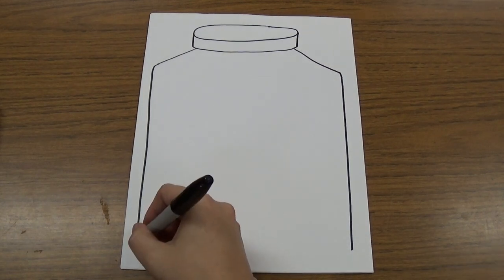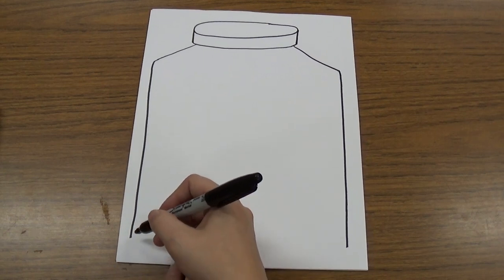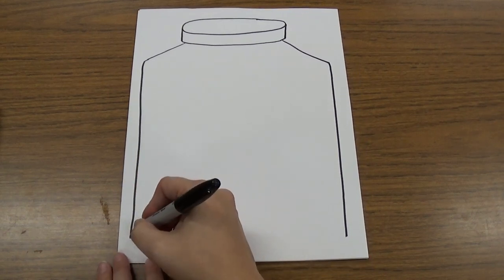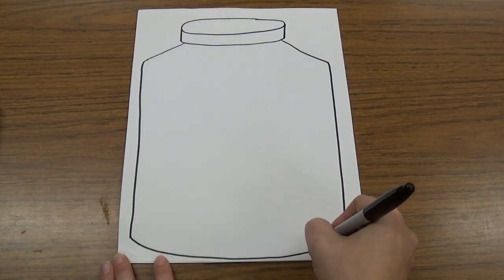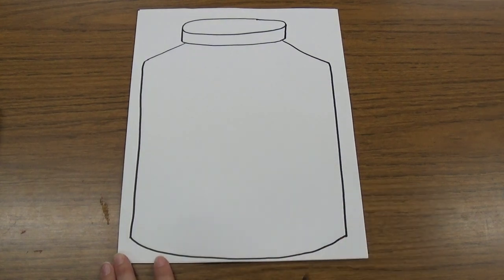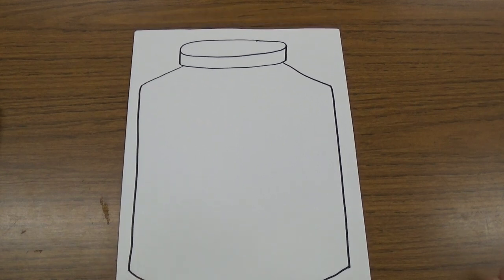This bottom line is going to curve a little bit to show that the bottom isn't square. It's a cylinder, it's a curve. So we're going to curve it around until it touches that other side. And then we have our jar.